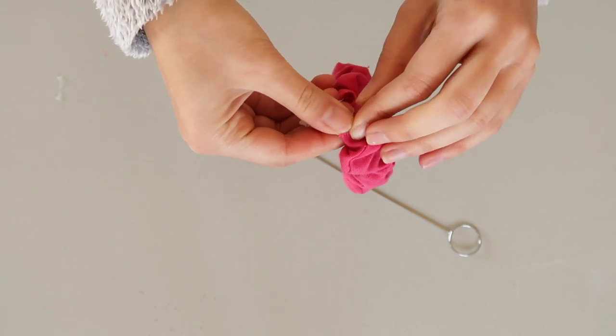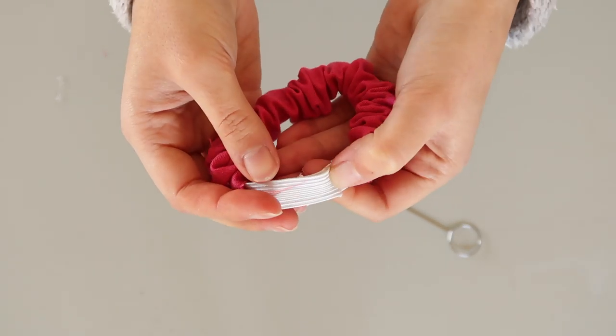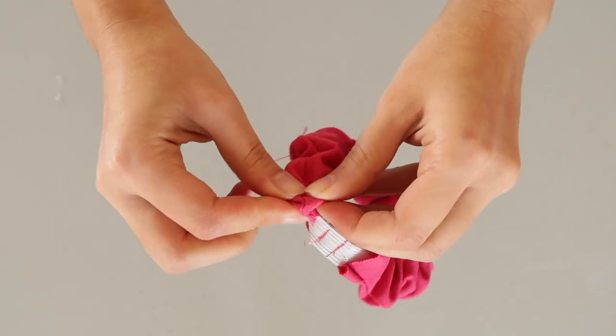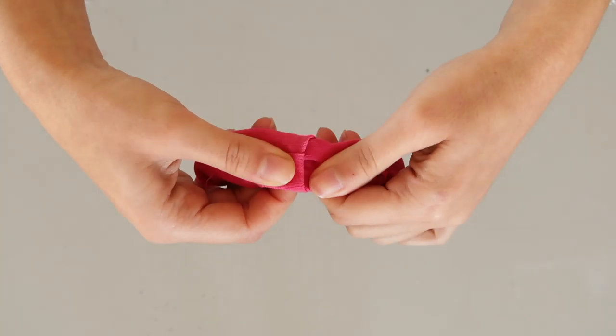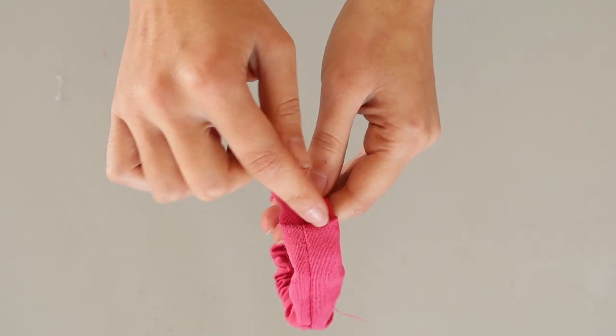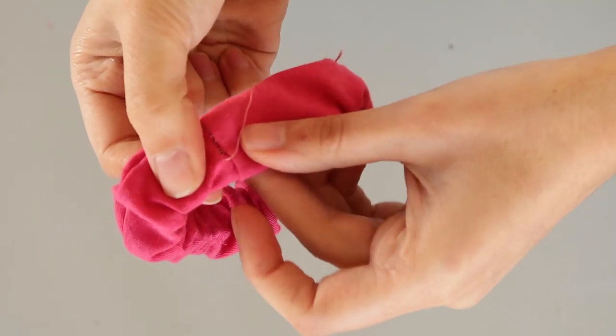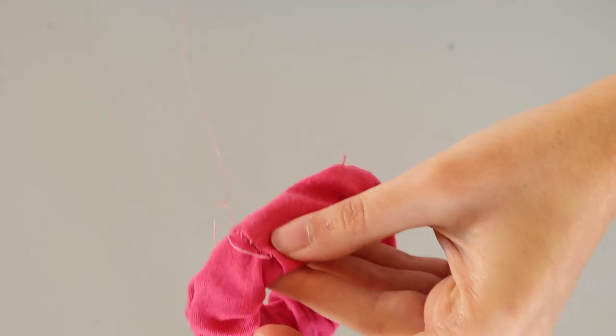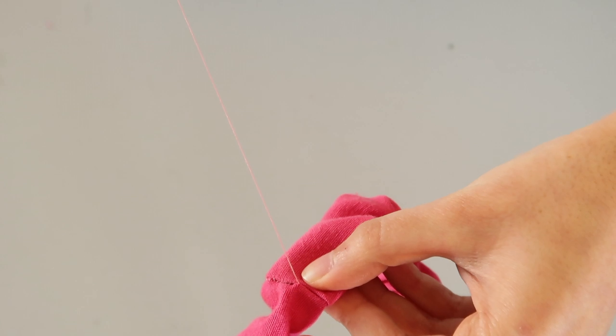Pull both ends and sew them together. Fold the raw edge on one of the scrunchie ends and tuck the other one inside, then sew the tube closed. You can also sew this part with the machine if you don't mind the flat seam, which you can later cover up with the bow. Now that you have the scrunchie part, let's move on to the bow.